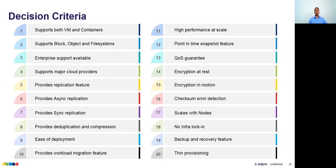Tenth: workload migration feature. This could mean migrating across Kubernetes clusters — for example, from on-premise to cloud, or between clouds. Options include taking a snapshot, copying it, and restoring it on the other side, or using sync replication so data is always copied and a failover can be triggered when something goes wrong.